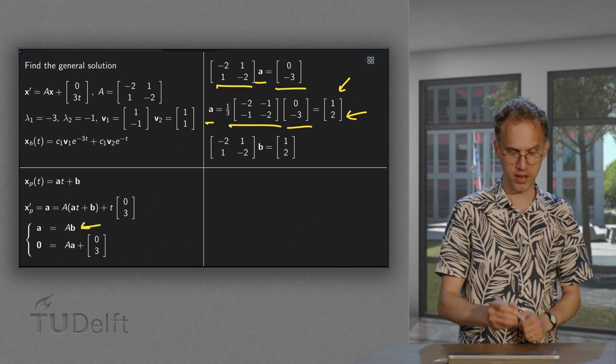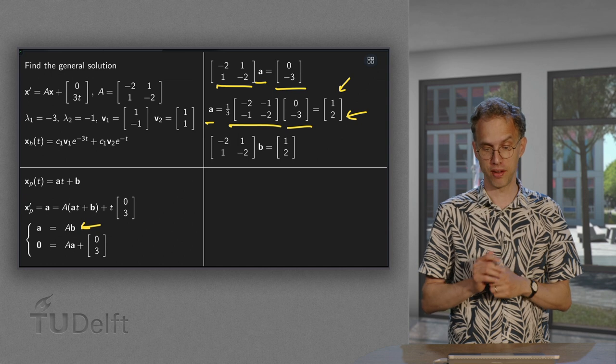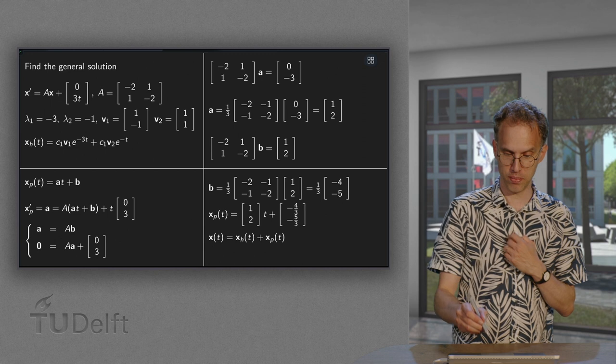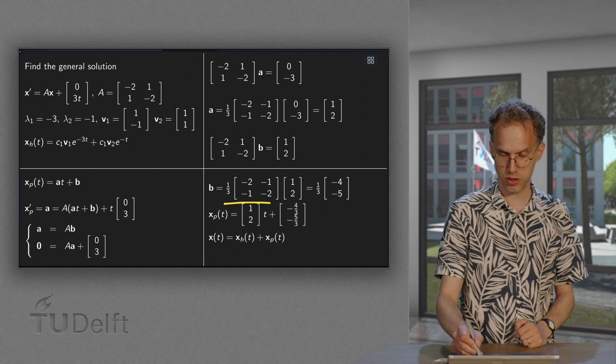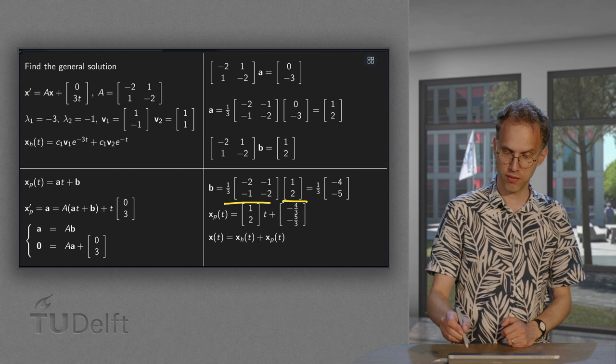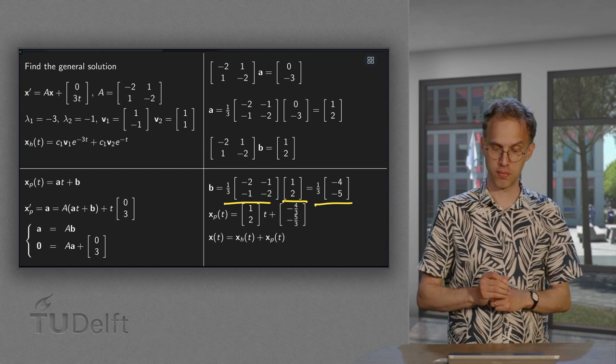Moving on to this problem here. Now, we know a, so we can find our vector b. Again, use the inverse. We already have it. So, our b is the same inverse times (1, 2).